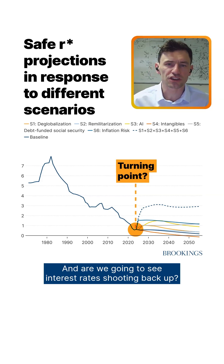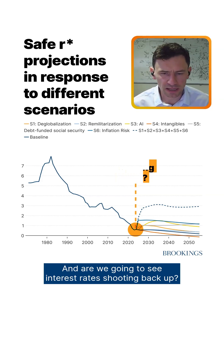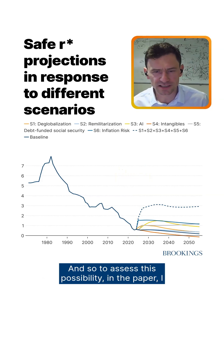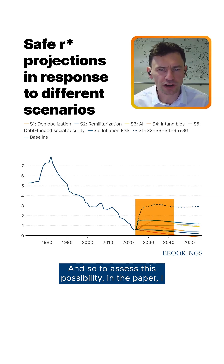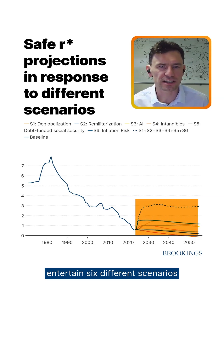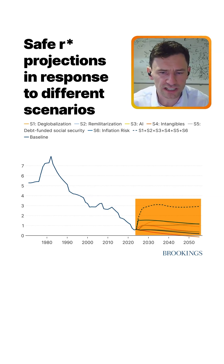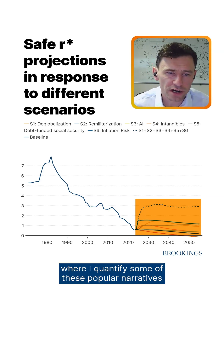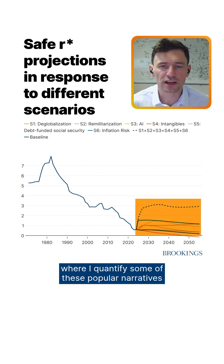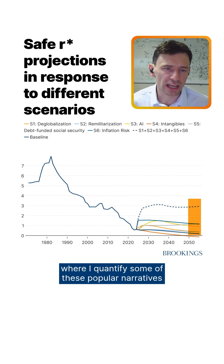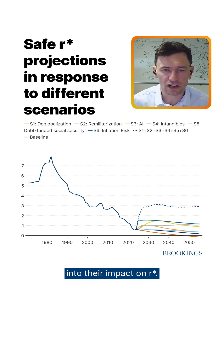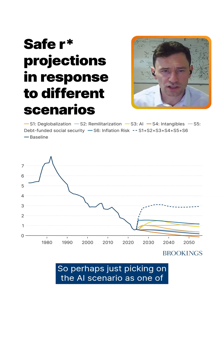Are we going to see interest rates shooting back up? To assess this possibility, in the paper I entertained six different scenarios. These lines from 2025 onwards project six different scenarios where I quantify some of these popular narratives and their impact on R-star.